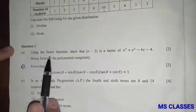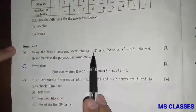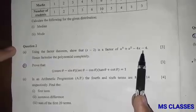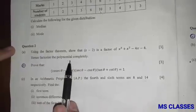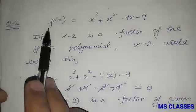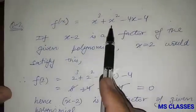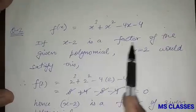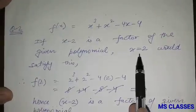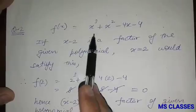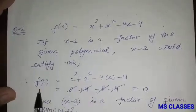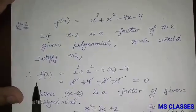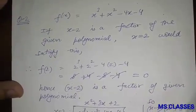Next question: using the Factor Theorem, show that (x − 2) is a factor of x³ + x² − 4x − 4, then fully factorize the polynomial. Here f(x) = x³ + x² − 4x − 4. If (x − 2) is a factor, then x = 2 should satisfy the equation. Replacing x with 2 gives f(2) = 0, confirming that (x − 2) is a factor.